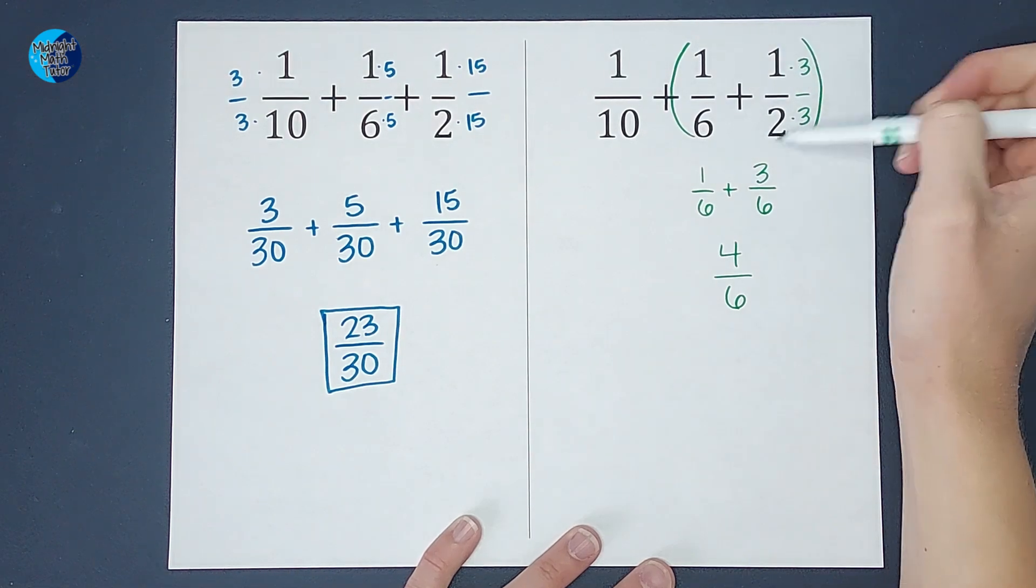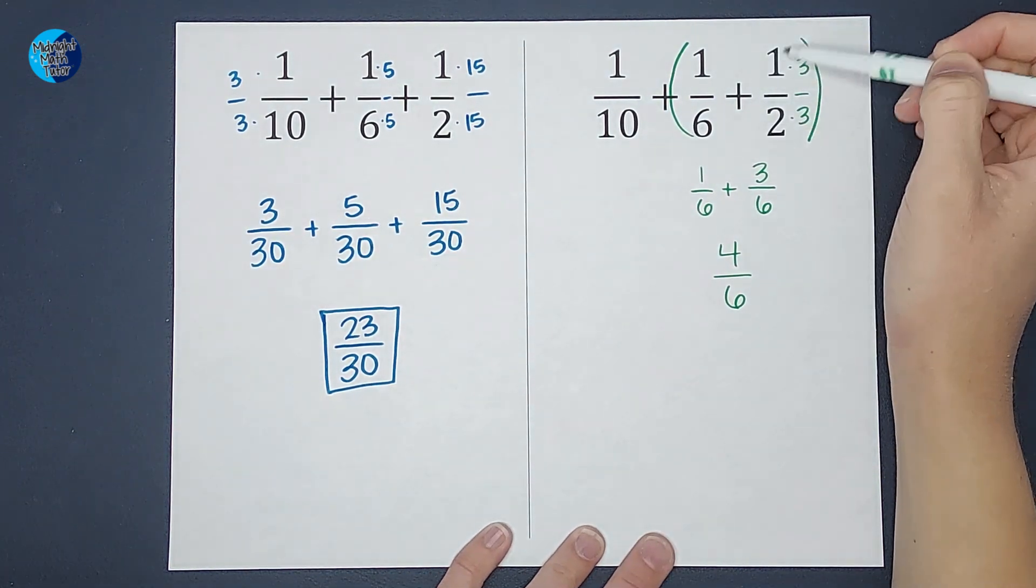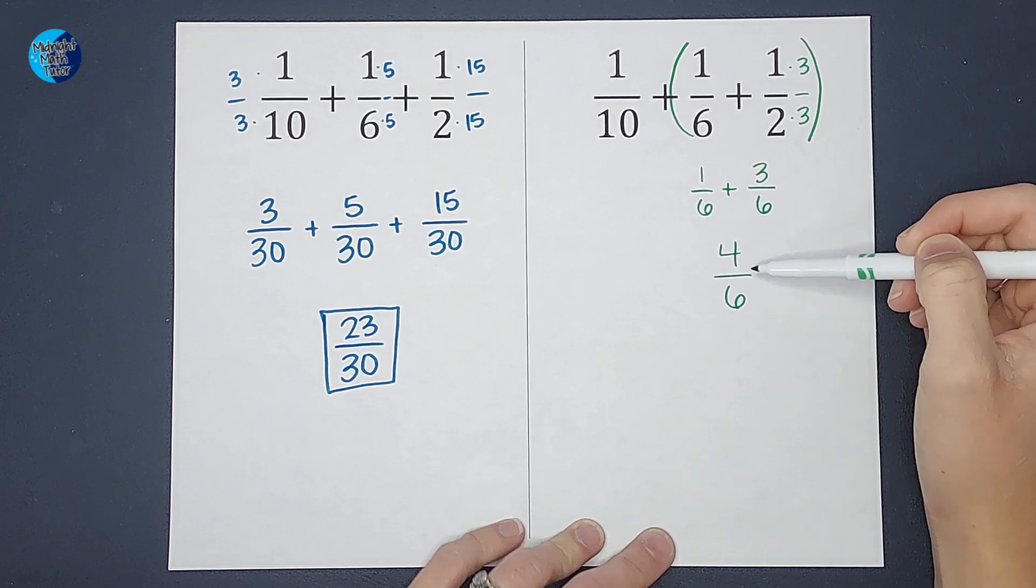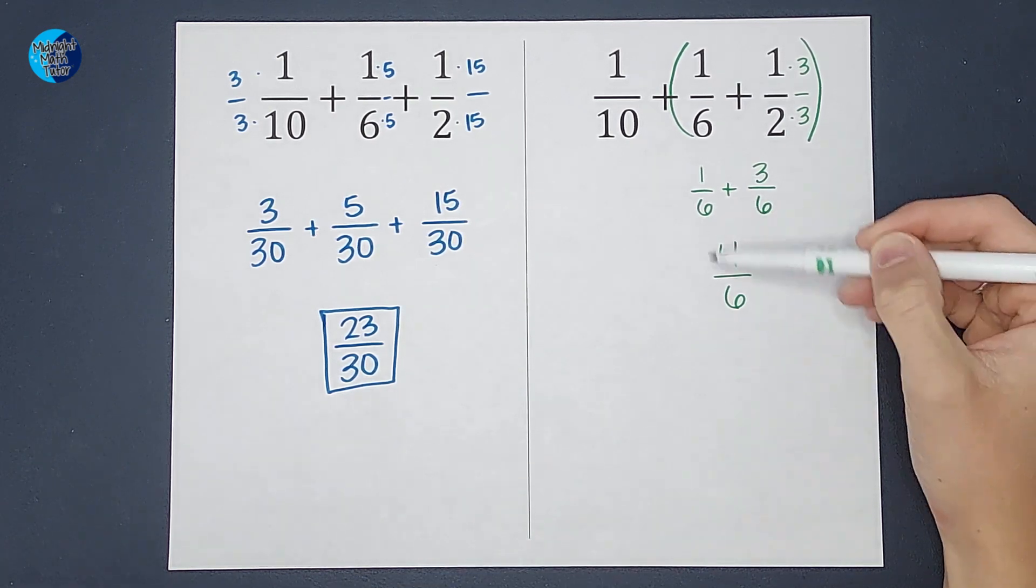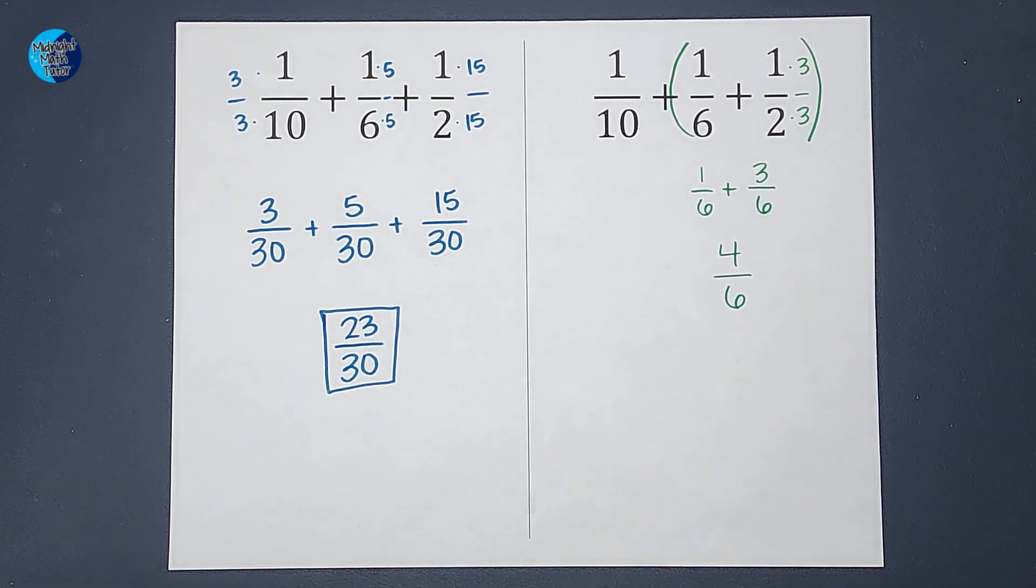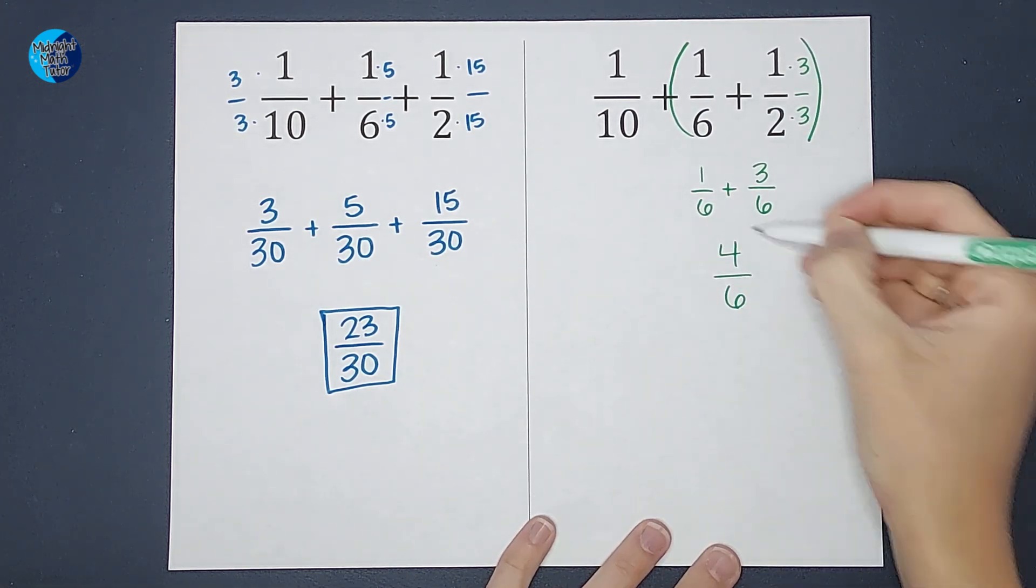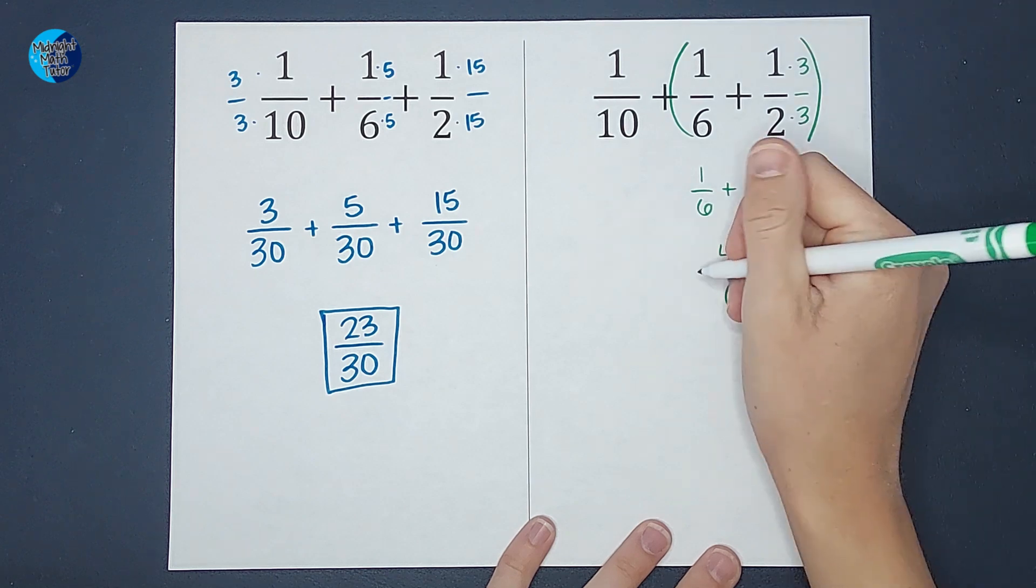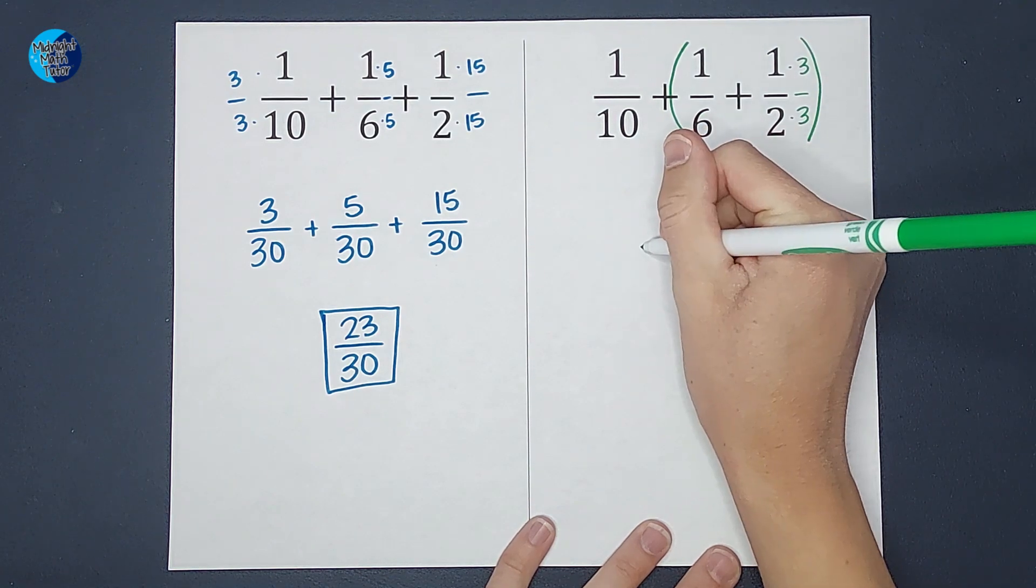So that was this group. The one sixth plus one half equals four sixths. Now you might be thinking that simplifies down. It does, but we're not going to take the time to simplify it down right this moment. So here's my four sixths. Here's the one tenth. I still need to add that one tenth.